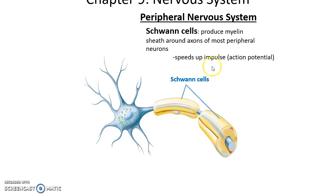In the peripheral nervous system, we have Schwann cells. Schwann cells wrap around a single portion of an axon, forming the myelin sheath around that region. Myelin sheath helps to speed up the action potential.